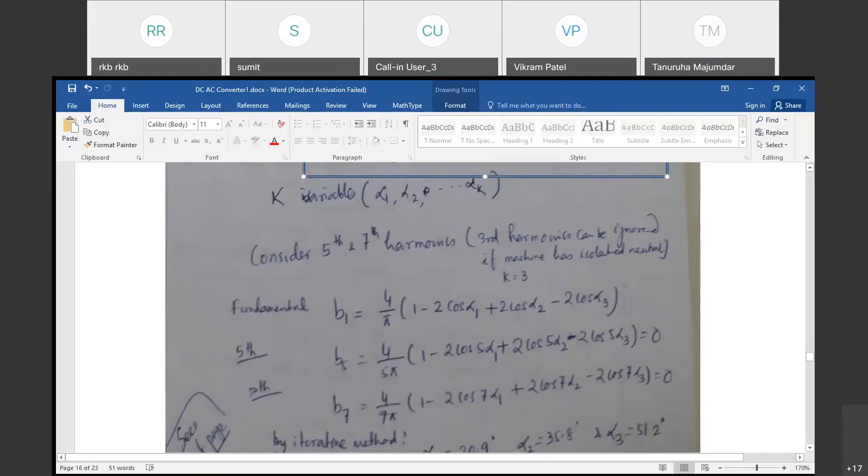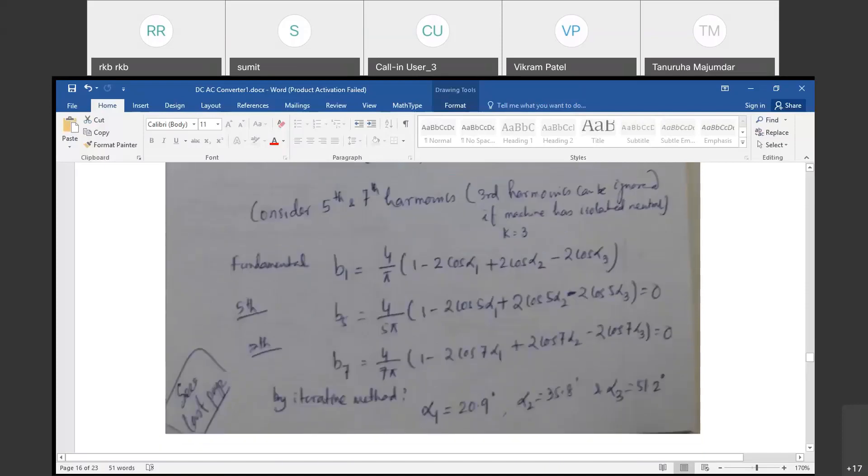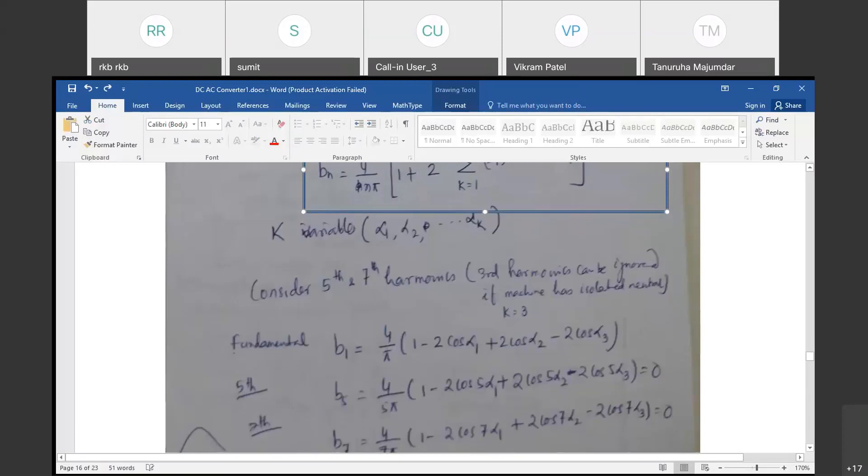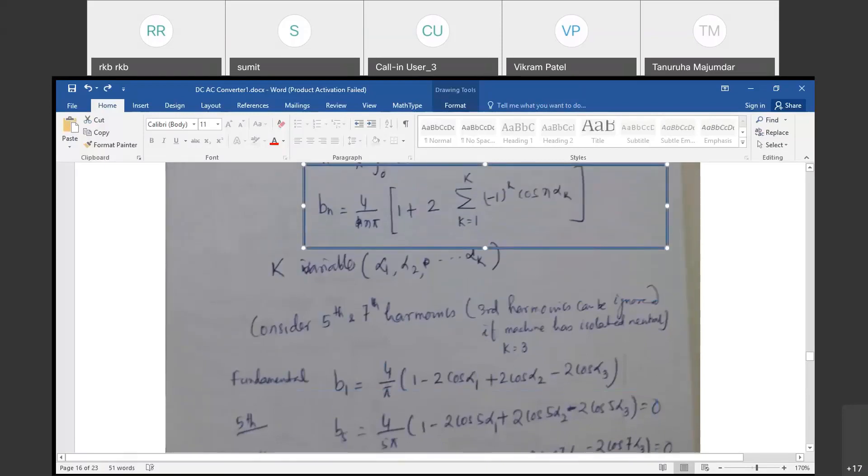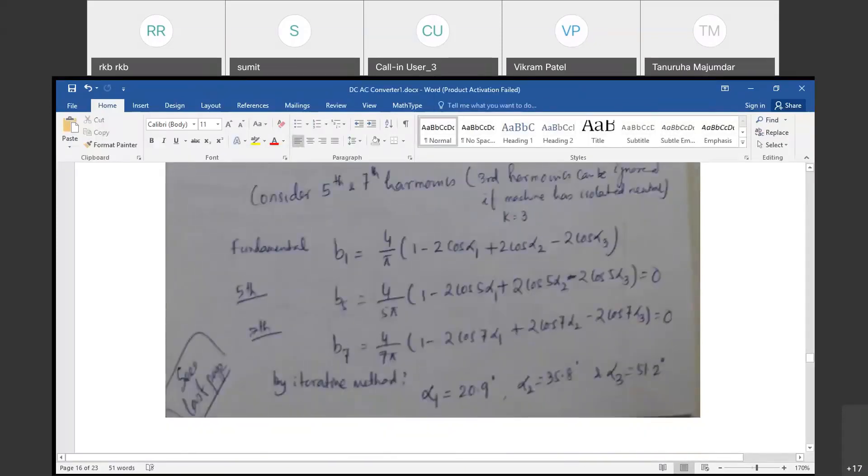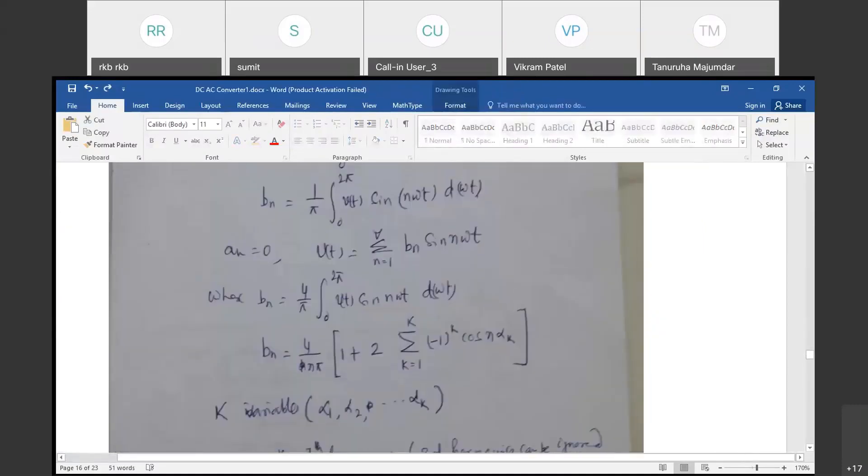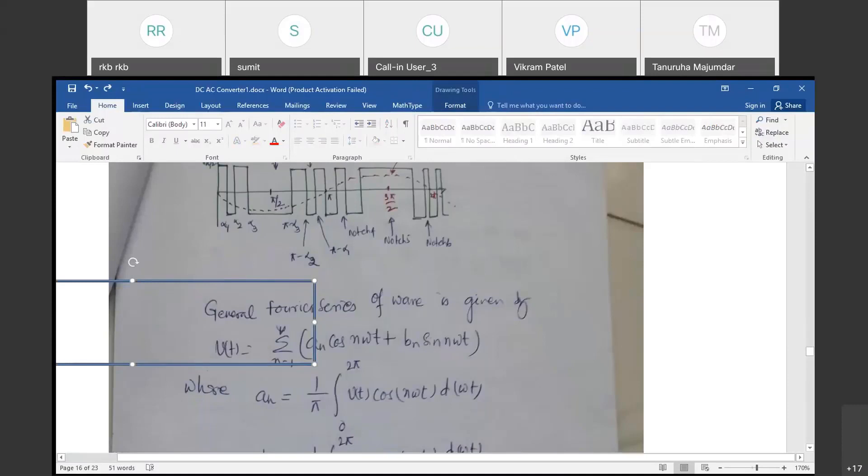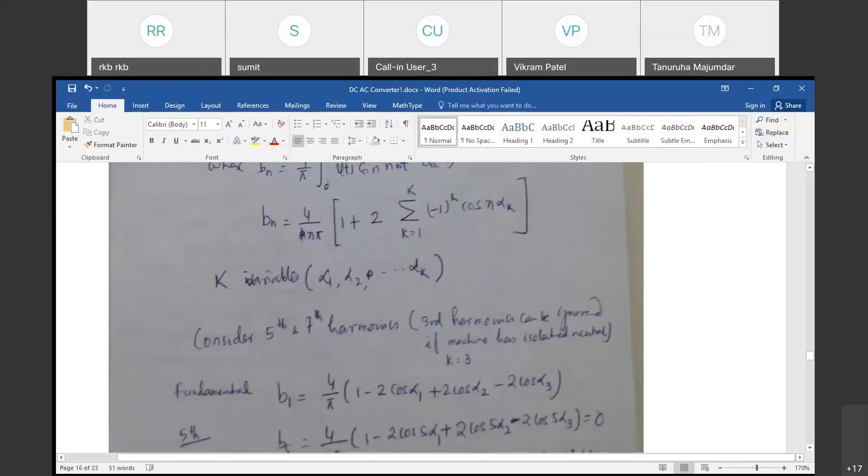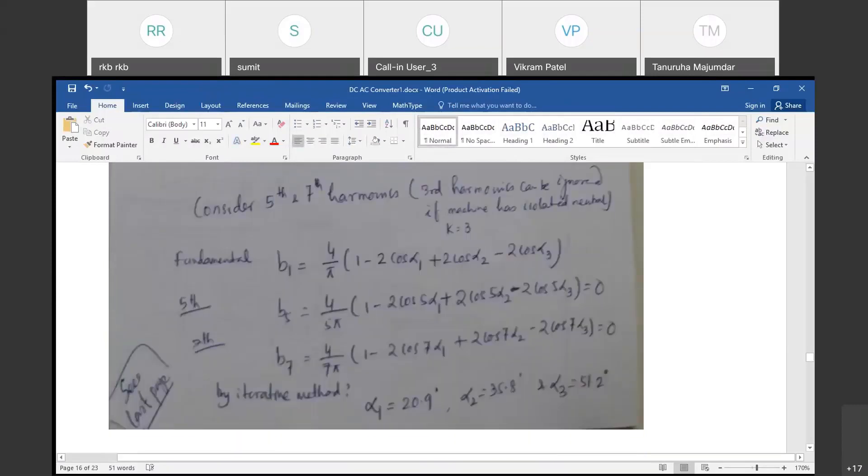B1 is your fundamental. Then, fifth and seventh. To eliminate these two, fifth and seventh, you put equals 0. When you put this 0, you will find out the α1 and α2 and α3 will be by iterative method. You can use also MATLAB. You can use also C C++ also. But after two variables, we can easily use our calculator and it can be easily derived.